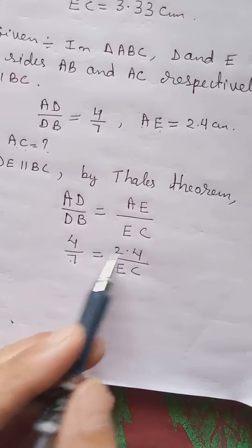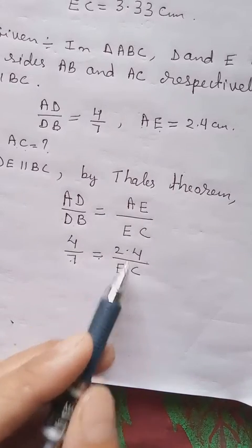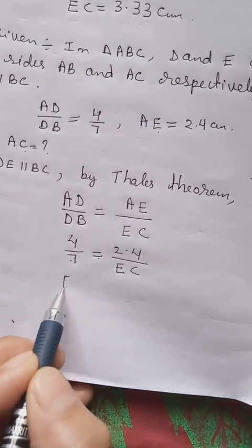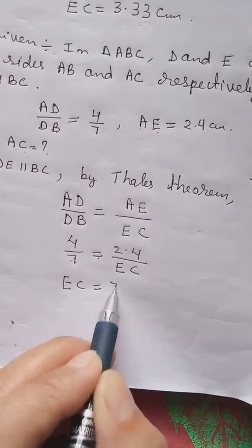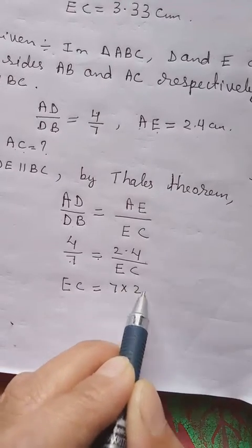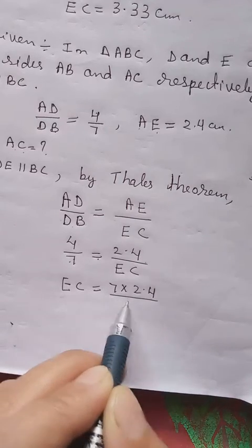So here we have fraction with equal sign, so we can cross multiply. So EC will go up, 4 will come down. 7 into 2.4, then by 4.